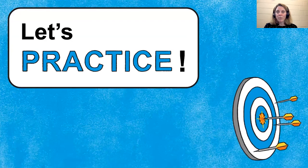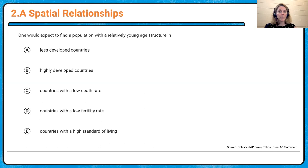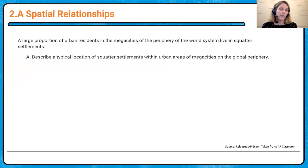What does this look like on a test? Let's break down each skill. Skill 2A is describing. What would one expect to find in a population with a relatively young age structure? A relatively young age structure is typically found in LDCs. Think about what type of jobs people might be doing and why we might find more kids there. For an FRQ: describe a typical location of squatter settlements within urban areas of megacities on the global periphery — what are those characteristics?